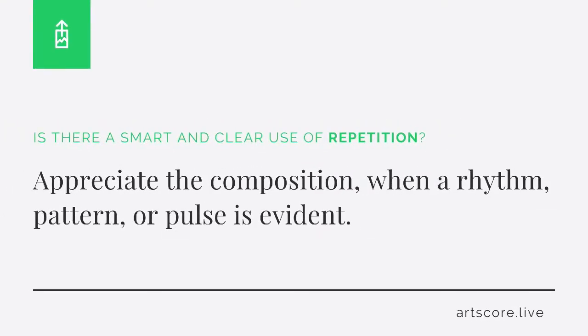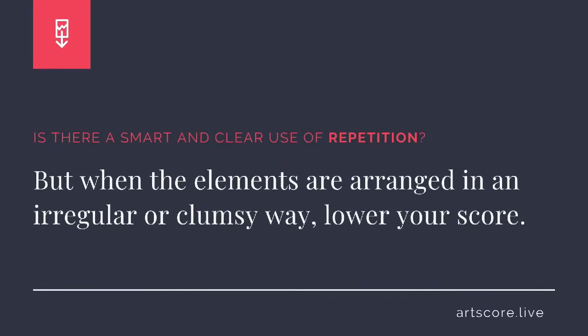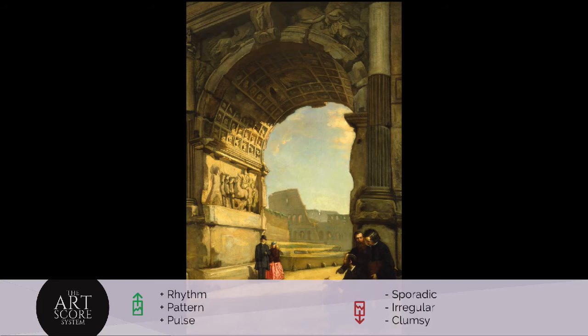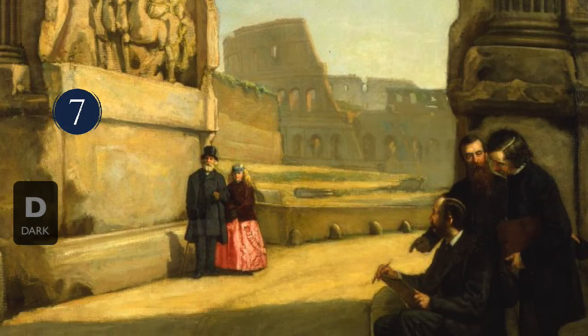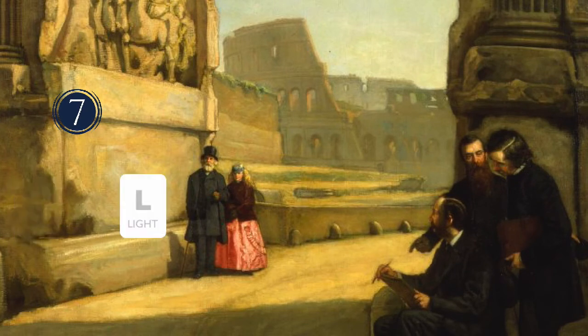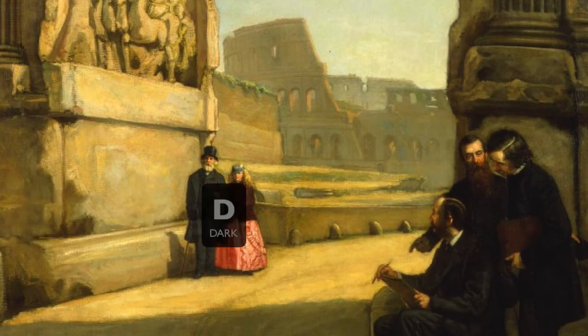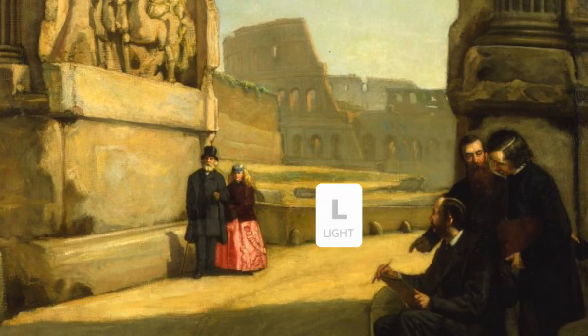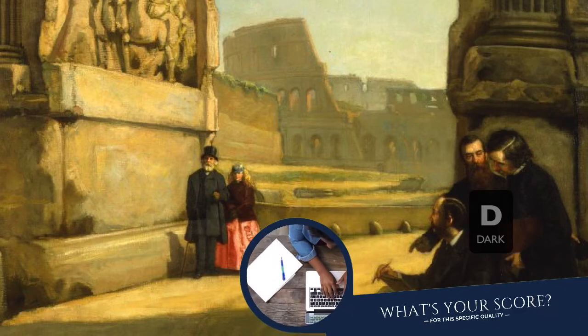Repetition. Is there a smart and clear use of repetition? Appreciate the composition when a rhythm, pattern, or pulse is evident. But when the elements are arranged in an irregular or clumsy way, lower your score. I scored the artwork a 7. I see the elements are in a repetitive pattern. What's your score?